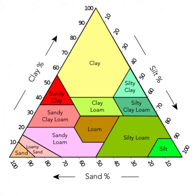Axes: the triangle has three axes, each corresponding to the percentage of one soil particle type. The sum of the percentages for sand, silt, and clay at any point within the triangle always equals 100%.